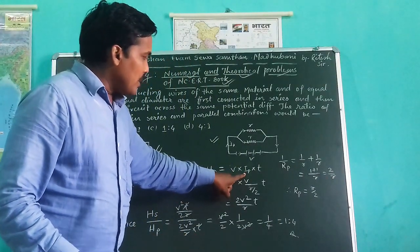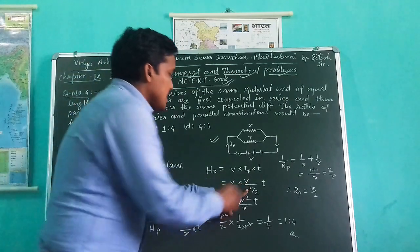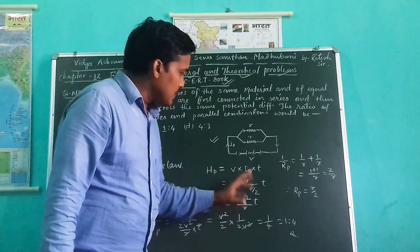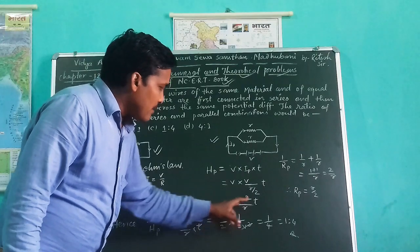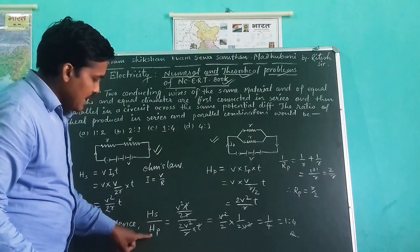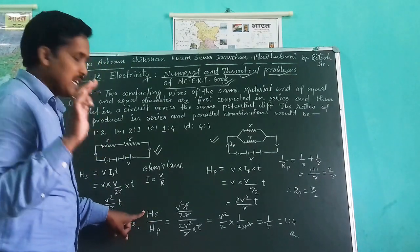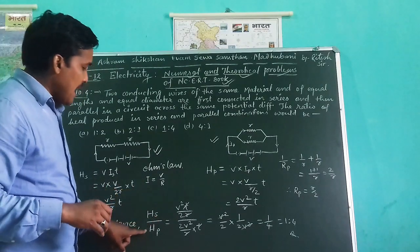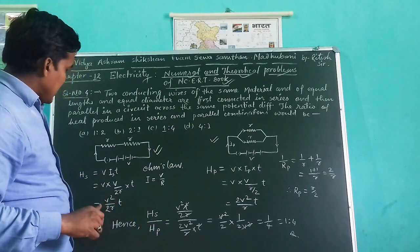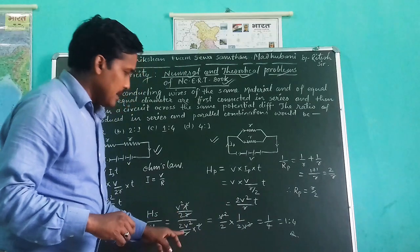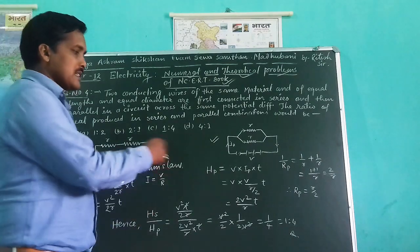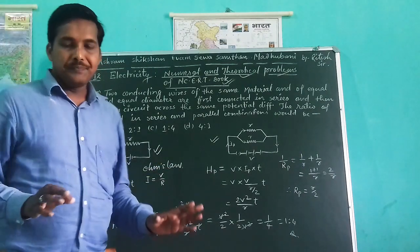So on solving this, we have got finally this one. And hence, the ratio of HS upon HP. Hence, heat generated in series combination and heat generated in parallel-wise combination. We have put the value of HS as well as HP here. On solving this, we finally get the ratio of HS - we can at a glance see the answer.